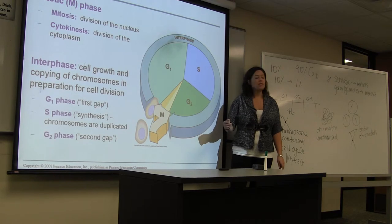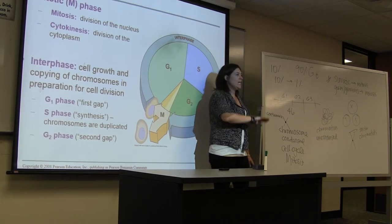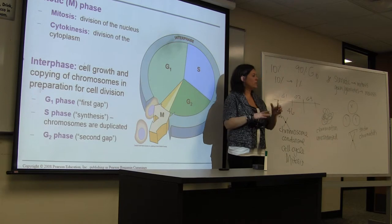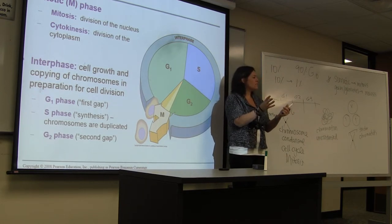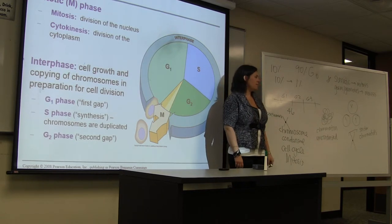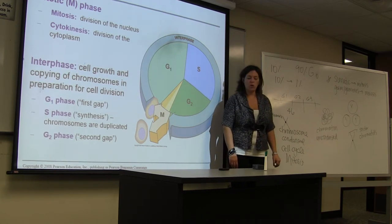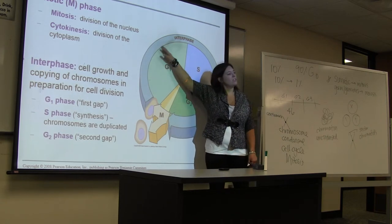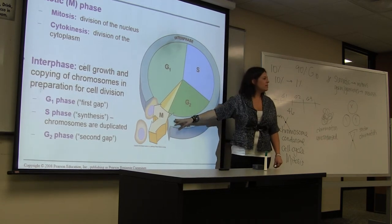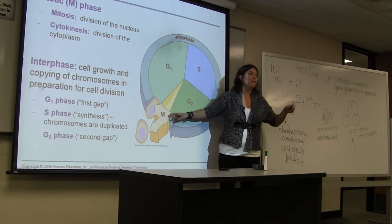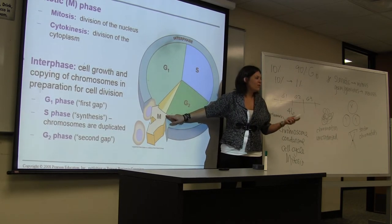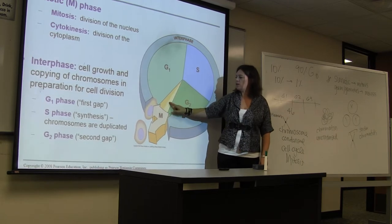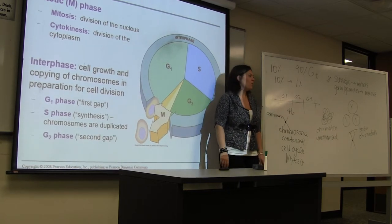Any given cell at any point in time is only going to be in the actual act of mitosis — in the process of dividing — 1% of the time. Technically, the entire cell cycle only makes up 10% of cells, and of that 10%, 10% of 10% is undergoing mitosis. 10% of 10% is 1%, so cells are only actively dividing about 1% of the time.